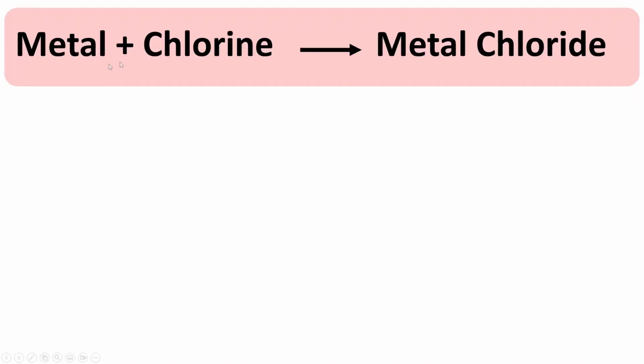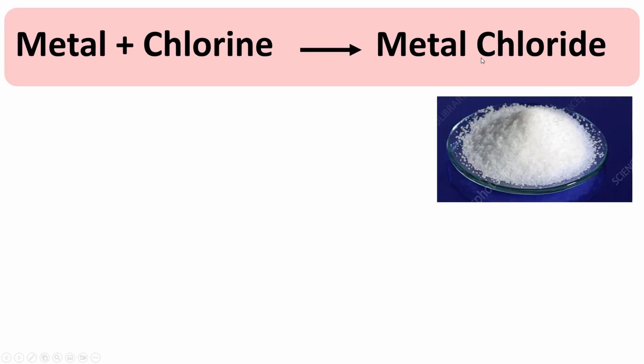Here's the general equation for the reaction. You have your alkali metal reacting with chlorine, and it forms a metal chloride. This metal chloride is actually a white crystalline salt.